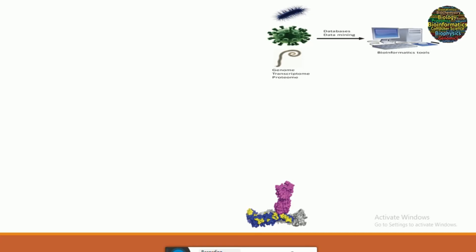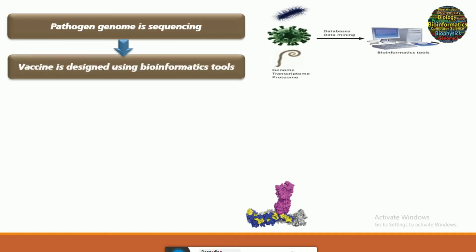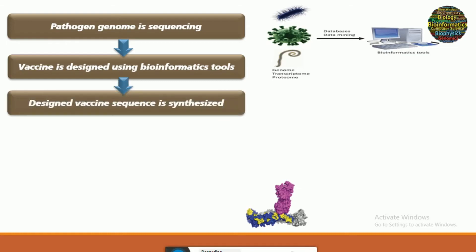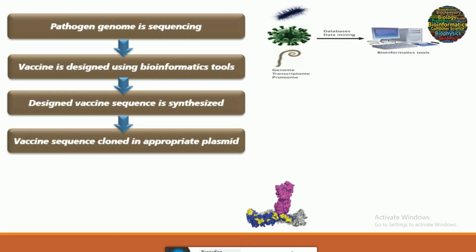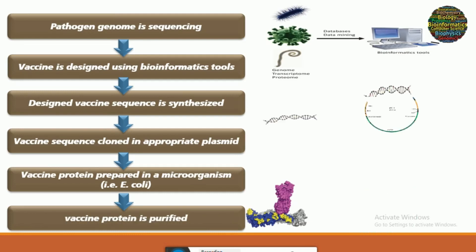So how do we develop a vaccine using bioinformatics and reverse vaccinology tools? First we do genome sequencing of the pathogen, and then that genome sequence is analyzed by different bioinformatics tools for identification of sequences that best induce an immune response in the host. The vaccine designed using this approach is then synthesized in the lab, that nucleotide sequence is cloned into an appropriate plasmid, and the plasmid is transferred into a microorganism where the vaccine will be prepared. This vaccine is then verified and used.